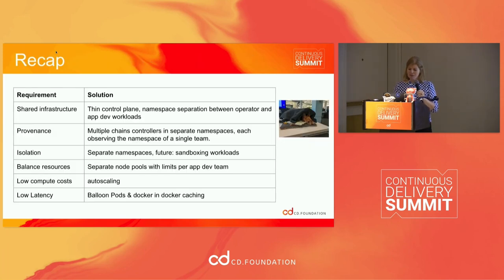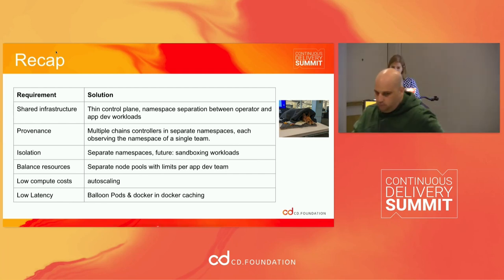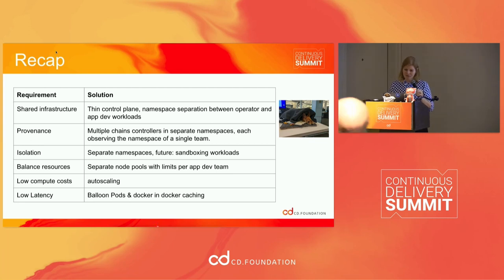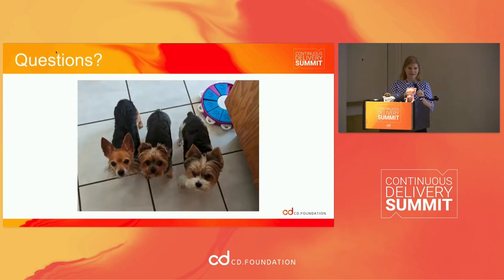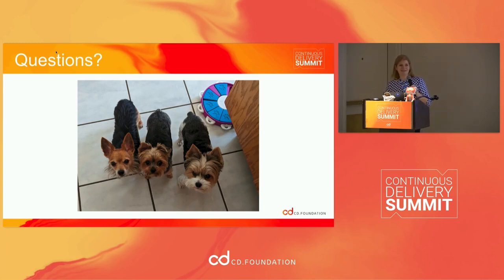Those were all the main complaints from our application developer teams. We talked about sharing infrastructure across teams in a secure and balanced way, generating provenance, resource isolation, and reducing compute costs and latency. And that's all I got — any questions?